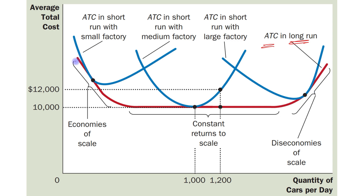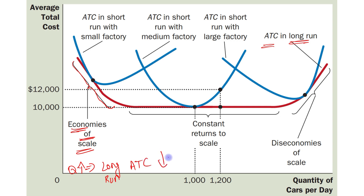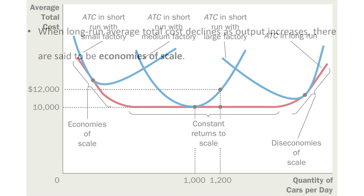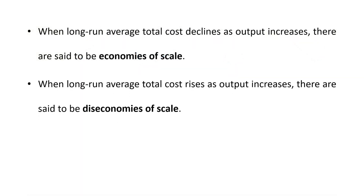So when long run average total cost declines as output increases, that means this portion here is termed as economies of scale — when output level increases, long run average total cost declines. This portion is known as economies of scale.